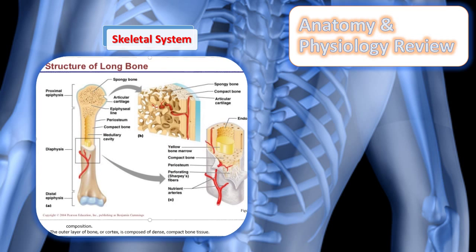Bones are also classified by structure. The outer layer of the bone, or cortex, is composed of dense compact bone tissue. The inner layer in the medulla contains spongy bone tissue with large spaces filled with red and yellow marrow. Hematopoiesis occurs in the red marrow, and the yellow marrow contains fat cells which can be dislodged into the bloodstream and cause life-threatening conditions such as fat embolism.